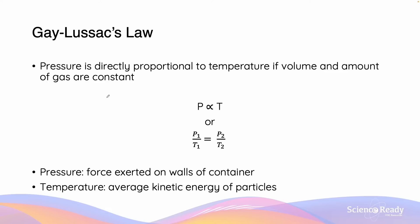Gay-Lussac's law states that pressure is directly proportional to temperature if the volume and amount of gas are held constant. This relationship is expressed mathematically as P is directly proportional to T, or that P1 divided by T1 equals P2 divided by T2 after a change in either pressure or temperature.